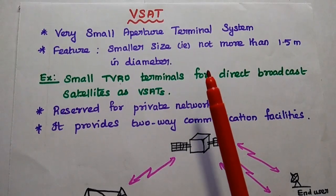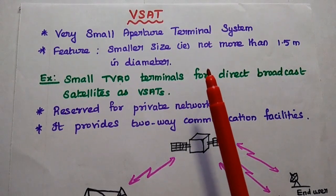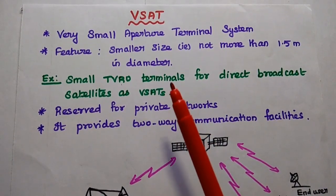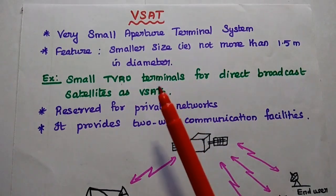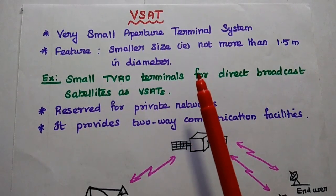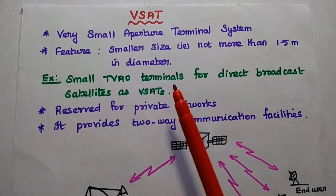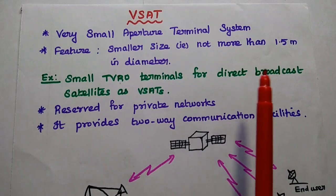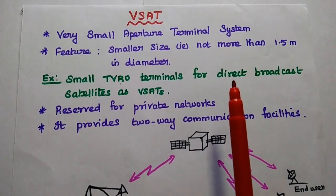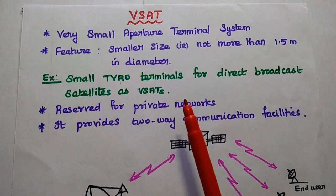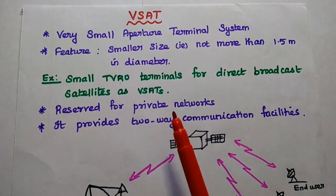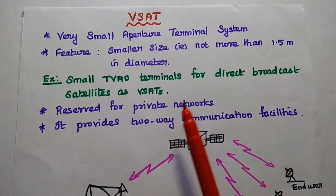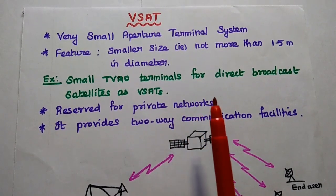Now we are going to discuss V-SAT in satellite communication systems. V-SAT stands for Very Small Aperture Terminal System. The very small aperture is the important feature of this V-SAT system — it represents the smaller size of the antenna, not more than 1.5 meters in diameter. For example, small TVRO terminals for direct broadcast satellites are considered as V-SATs. TVRO means Television Receive Only terminals, like a dish antenna.